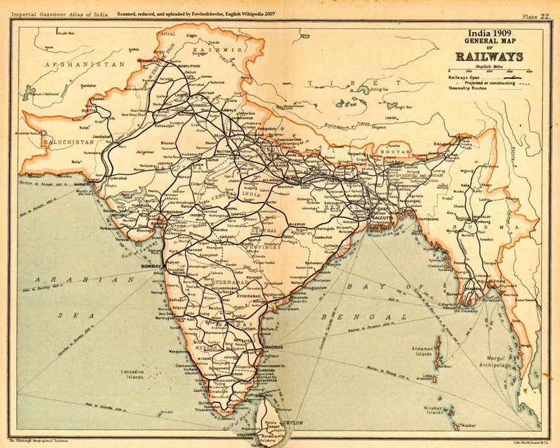The Indus Valley Civilisation, the first known permanent and predominantly urban settlement, flourished between 3500 BCE and 1800 BCE. It featured an advanced and thriving economic system. Its citizens practiced agriculture, domesticated animals, made sharp tools and weapons from copper, bronze and tin, and traded with other cities. Evidence of well-laid streets, layouts, drainage system and water supply in the valley's major cities — Dholavira, Harappa, Lothal, Mohenjo-Daro and Rakhigarhi — reveals their knowledge of urban planning.